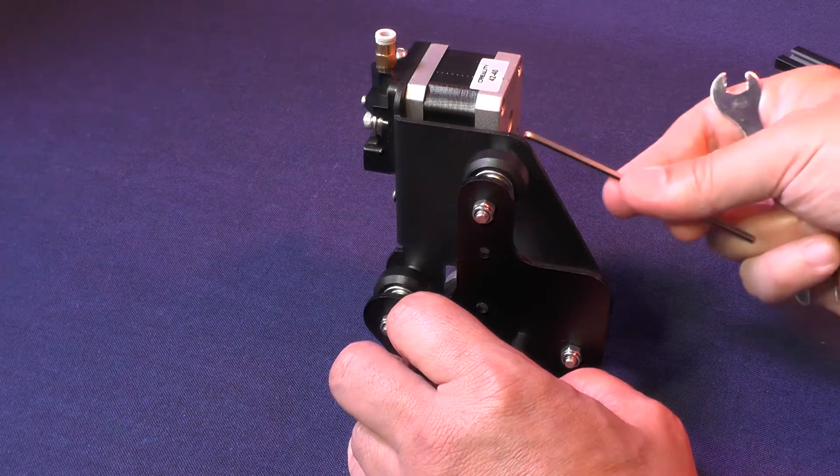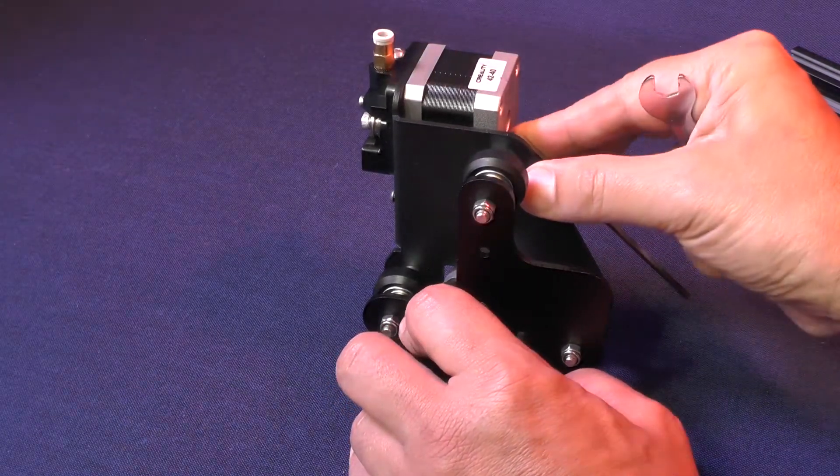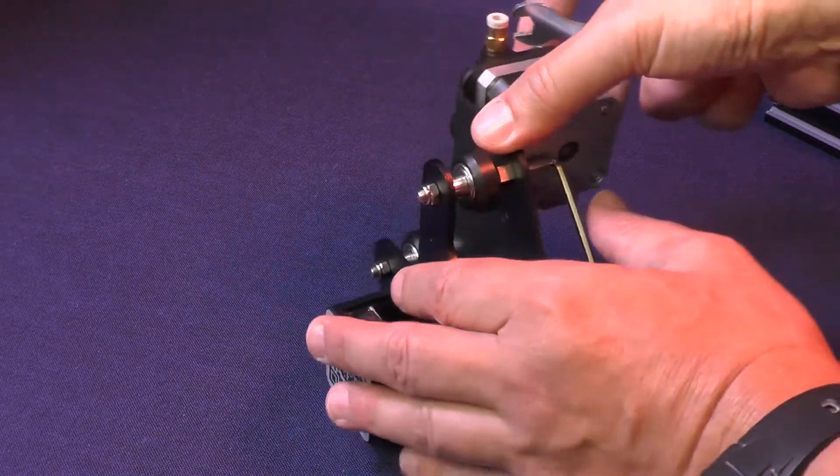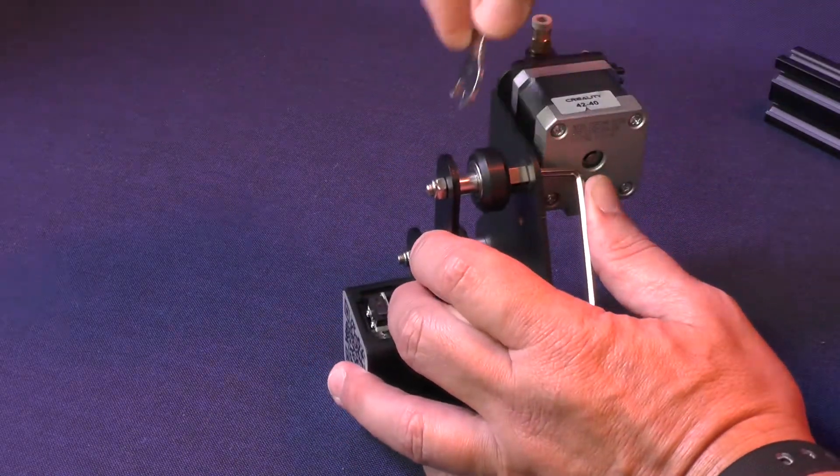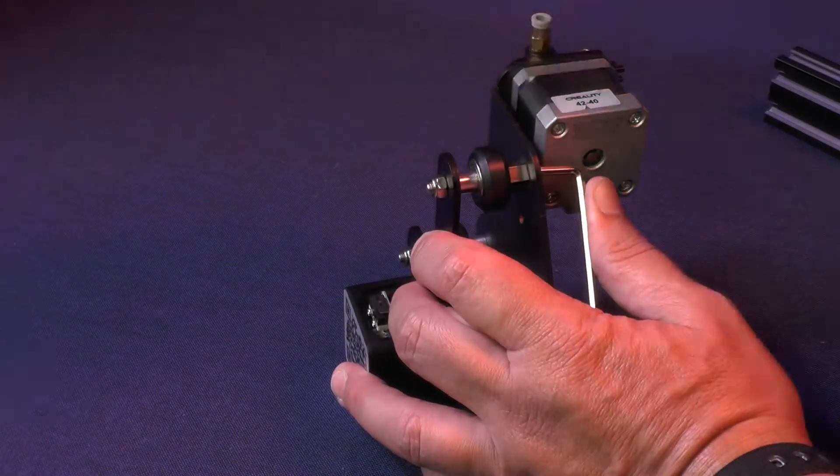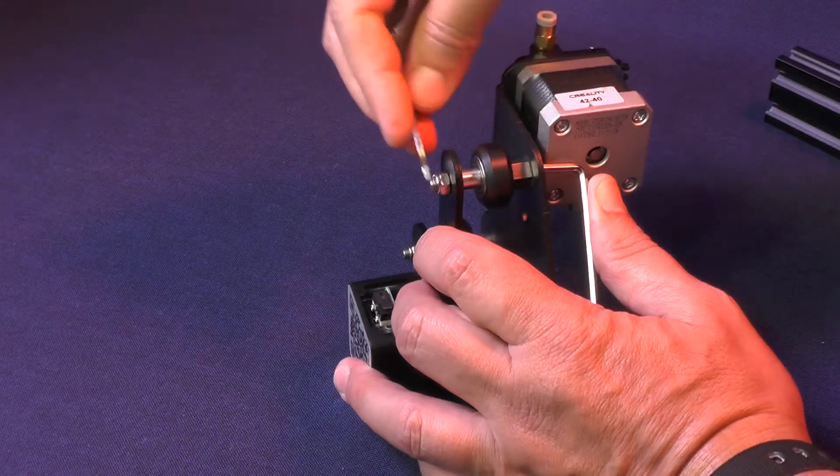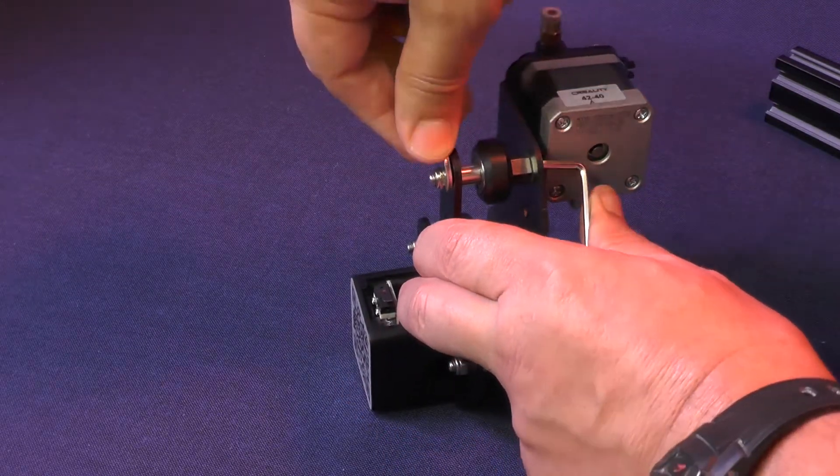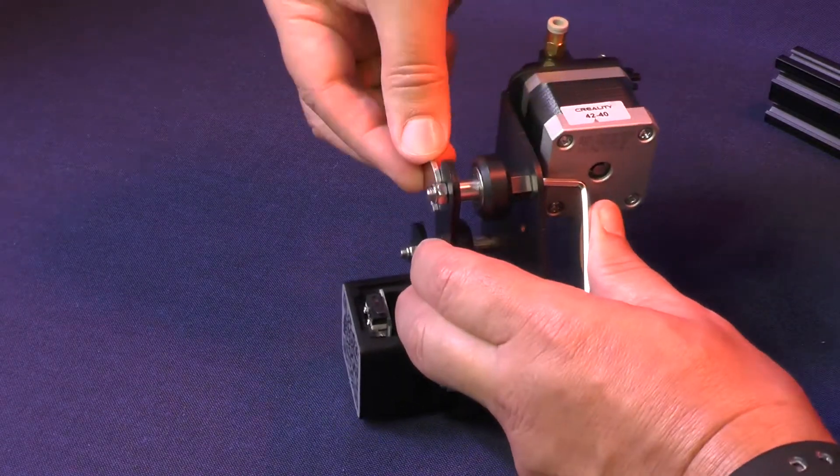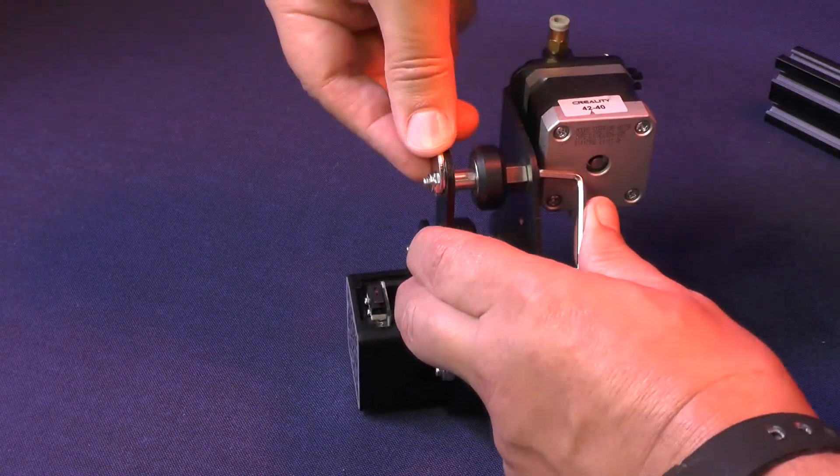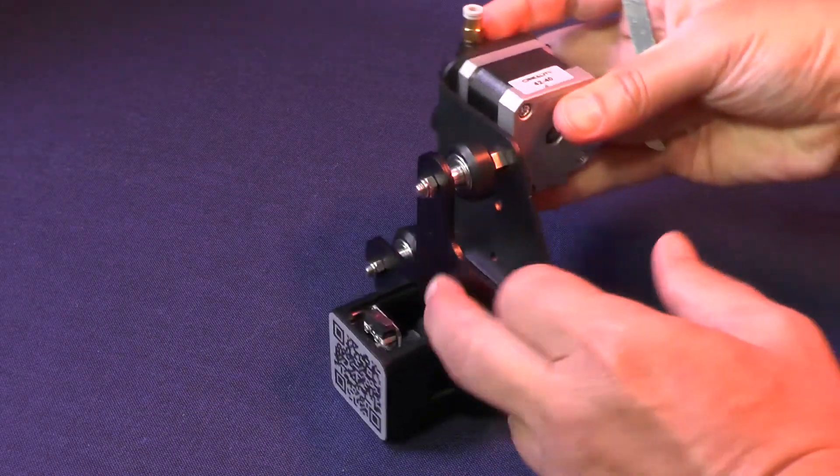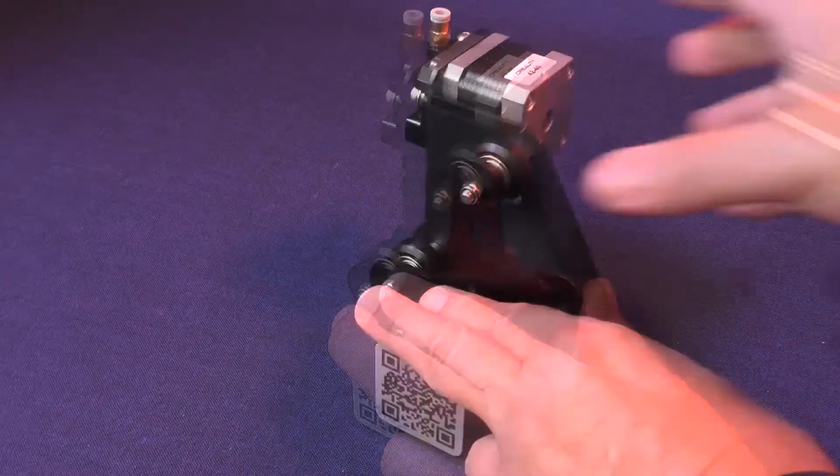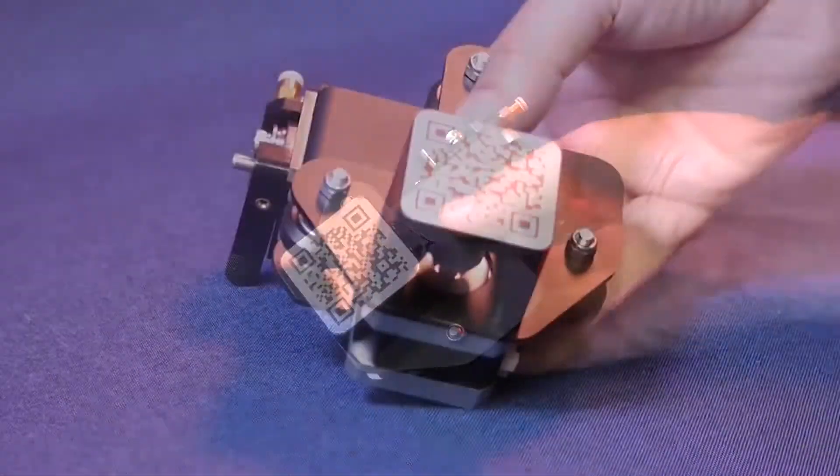Now, we tighten the screw to make our eccentric nut adjustment permanent. As you can see, I always use my little high school trick. Great! Now, my eccentric nut adjustment has been secured.